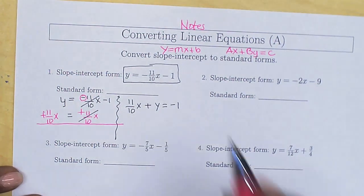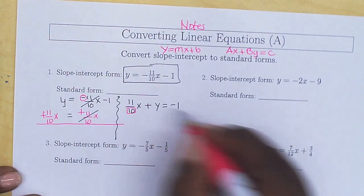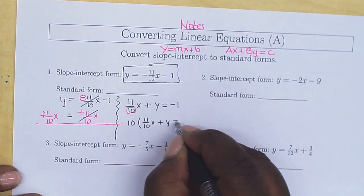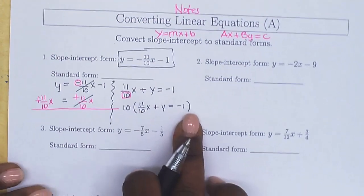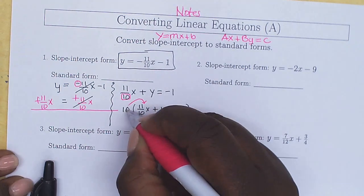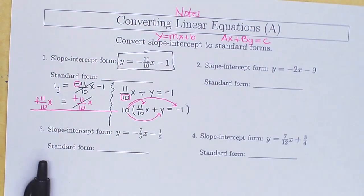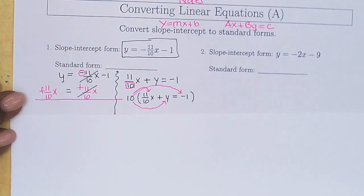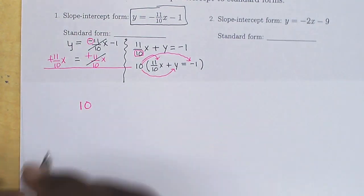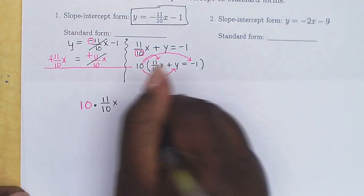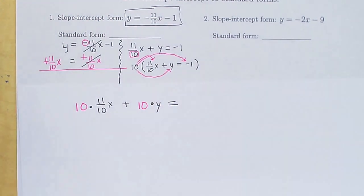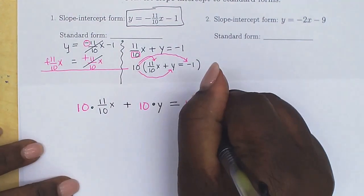We have 11 over 10x plus y equals negative 1, because we're able to cancel those two out. Now, since we have this number in the denominator, we're going to multiply everything by 10. So, 10 times 11 over 10x plus y equals negative 1. Everything on both sides, we want to multiply it by 10.